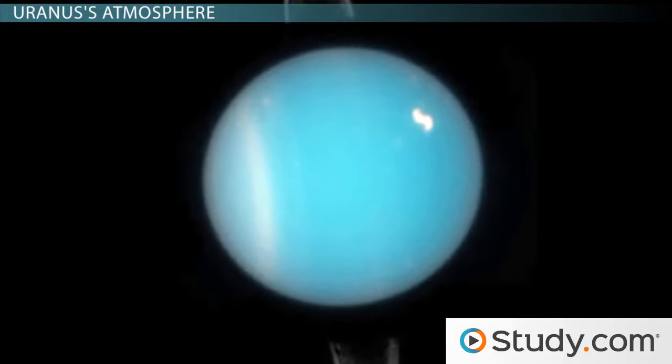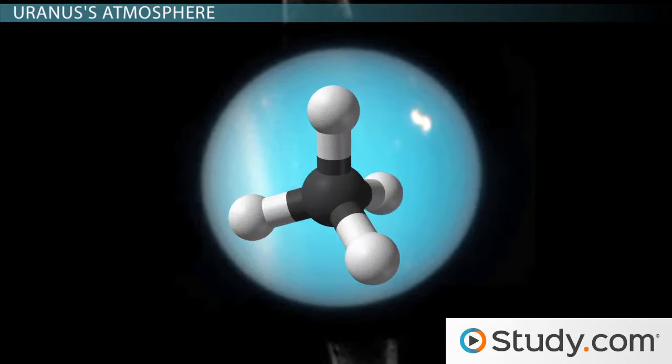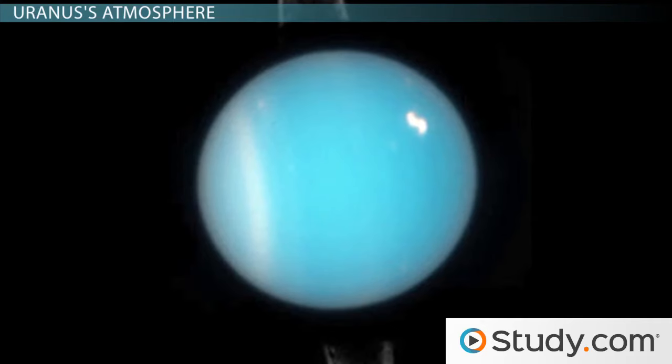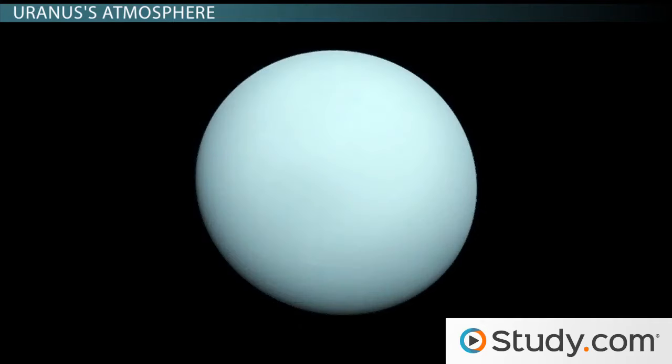There are some clouds on Uranus, made of methane, but they're nothing to write home about, because they form in the lower reaches of the atmosphere, the ones that are hazed out due to the hydrocarbon. And so, they're hard for us to see.